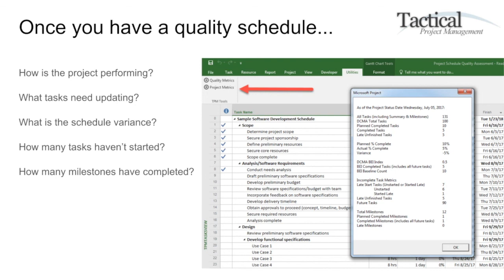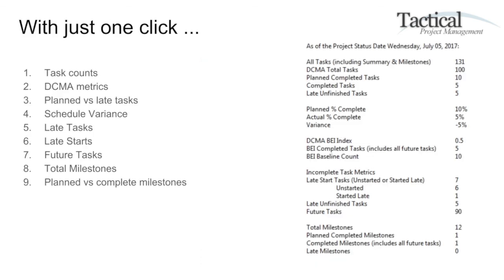I find this tool invaluable when you're trying to evaluate the performance of the project schedule through the overall project baseline. At one click, you get task counts, the DCMA metrics, plan versus late tasks, schedule variance, late tasks, late starts, future tasks, total milestones, and planned versus completed milestones — all within the Microsoft Project environment.